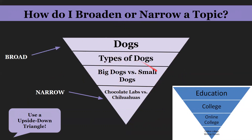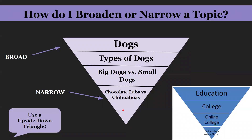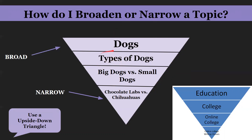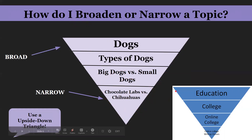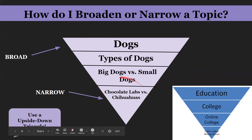Chocolate Labs versus Chihuahuas is a solid paper because you can compare and contrast the two, rather than covering every single big dog, every single small dog, or every single type of dog. The topic gets bigger and bigger as you go up the triangle. It's just like a funnel where it goes down and down until you get your perfect topic. If you wanted, you could go even more narrow — but then that might limit your research.